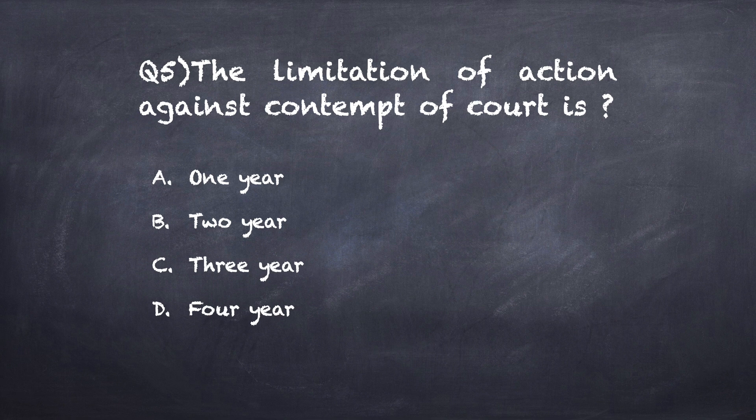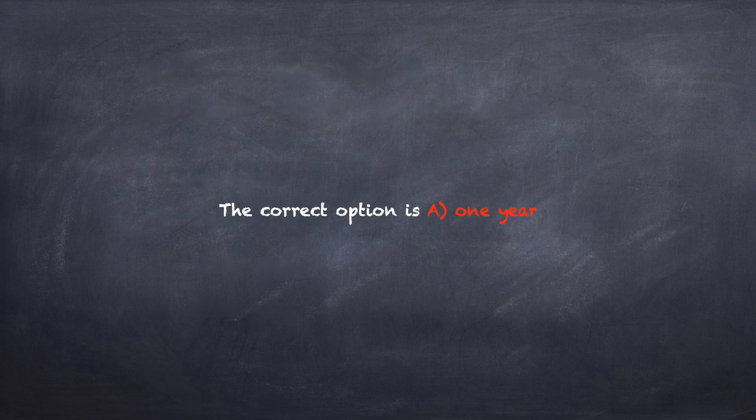Question number five: The limitation of action against contempt of court is? Option A: one year. Option B: two years. Option C: three years. Option D: four years. The correct option is A, one year.